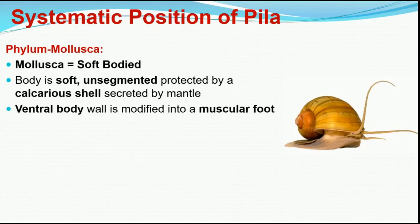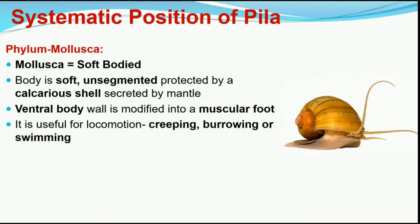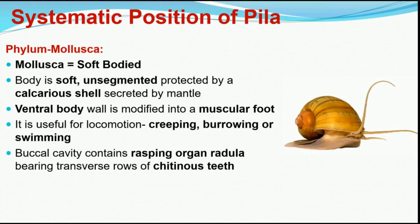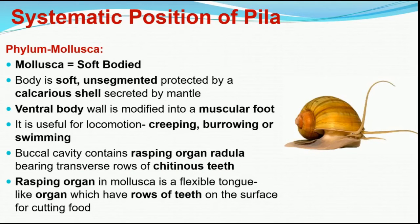Pila also shows other features: the ventral body wall is modified into a muscular foot, normally used for creeping, burrowing, and swimming. The buccal cavity, just beside the mouth, contains a rasping organ known as the radula. The radula is a tongue-like structure bearing rows of chitinous teeth, and its function is cutting food. This rasping organ with rows of teeth is useful for cutting food before it enters the esophagus.